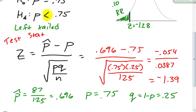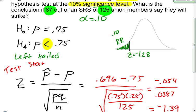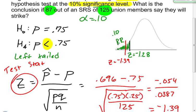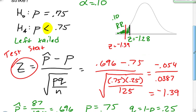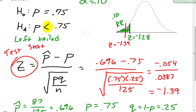What I'm going to do with this test statistic of negative 1.39 is look at where it falls on my graph. Negative 1.39 on this number line is going to be somewhere over here — remember, it's a z-score. The z-score that cuts off my rejection region is negative 1.28, and my test statistic z equals negative 1.39. So my test statistic falls into the rejection region, which leads me to the conclusion to reject my null hypothesis.